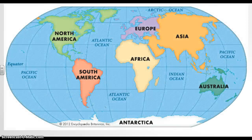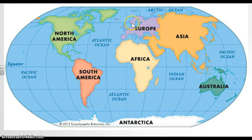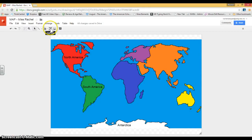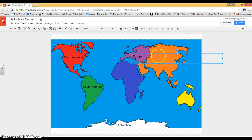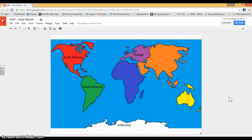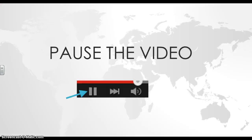The next continent we are going to look at and type is Europe. Europe is the smaller one right above Africa and next to Asia. I'm going to type Europe right up here. I'm going to press my T for text box and click on top of Europe — capital E-U-R-O-P-E. I can pull it so that it's right in the center, click outside, and then it's there. Go ahead and pause the video and add Europe to your continents.